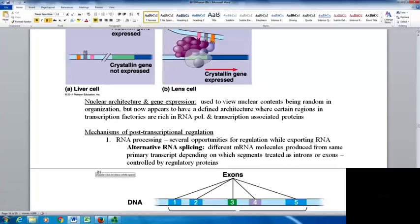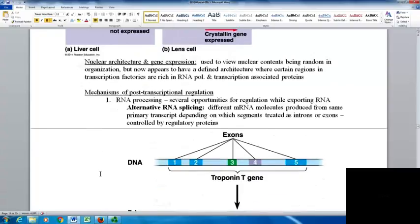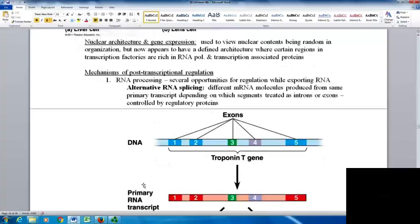We can have post-transcriptional regulation starting with RNA processing. There are several opportunities for regulation while exporting the RNA, one way being alternative RNA splicing.